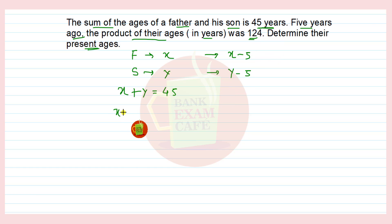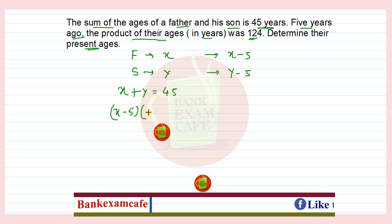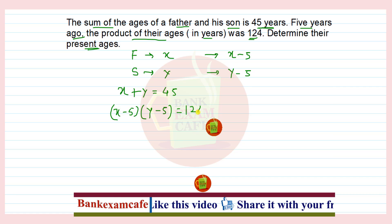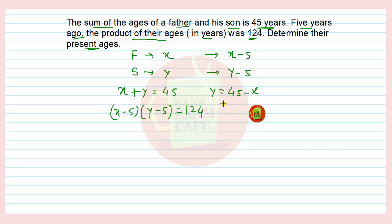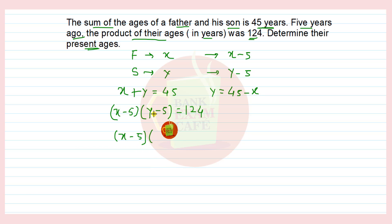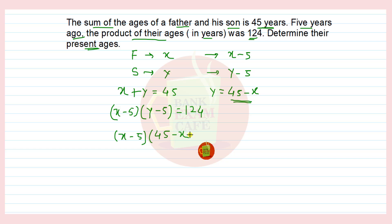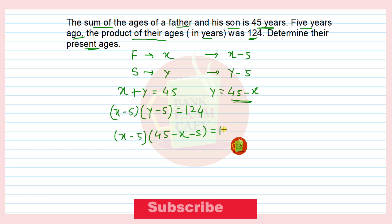So (x − 5)(y − 5) = 124. From the first equation, y = 45 − x. We substitute the value of y into this equation, giving us (x − 5)(45 − x − 5) = 124, which simplifies to (x − 5)(40 − x) = 124.